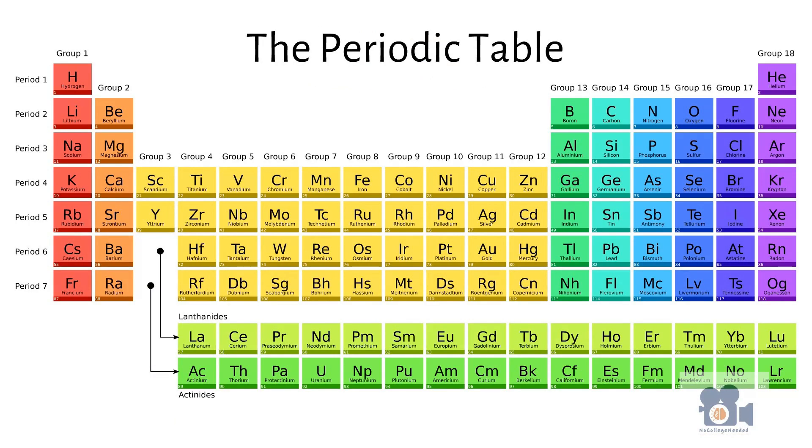The periodic table was developed by arranging all the known elements in order of increasing atomic number. Remember from previous units, the atomic number is the number of protons in an atom's nucleus, and this is what determines an element's chemical properties. The first version of the periodic table was proposed by Russian chemist Dmitry Mendeleev in 1869, and has since been revised and expanded as new elements have been discovered.